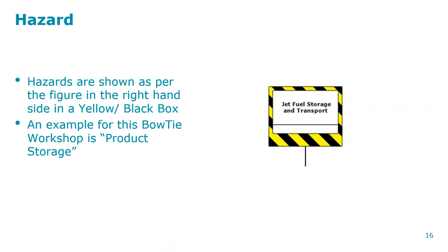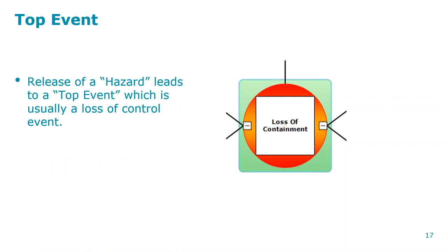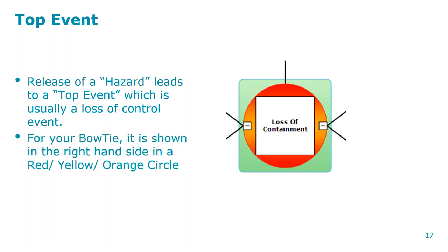The hazard is shown in a yellow and black box — this is the convention. The top event is usually shown in a red/orange circle. For example, jet fuel storage and transport is the hazard. The hazard is the jet fuel — if it loses containment it can catch fire or cause loss of marine life, like the huge shipping disasters when oil leaks from a container.